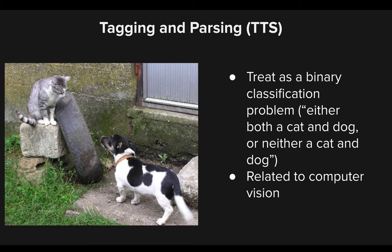An interesting concept toward the end of today is tagging and parsing. Going back to our initial cat versus dog problem: suppose you have a picture and want to classify it — but the picture contains both a cat and a dog. In our previous example, we classified a picture as either a cat or a dog. But here, the same image has both. The way we solve this double-input problem is to tag it and parse it, where we can identify it as both a cat and a dog or neither. This is a subset related to computer vision.